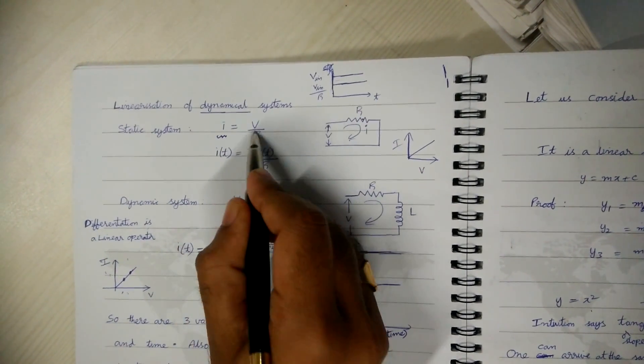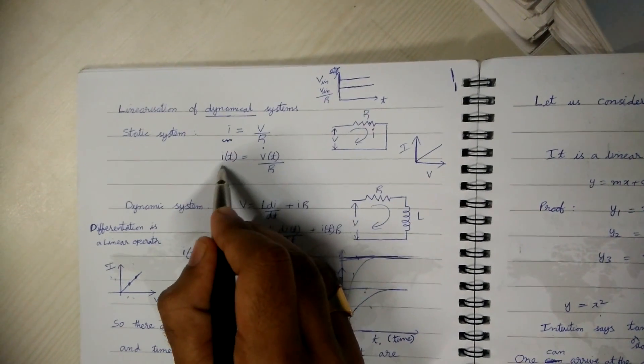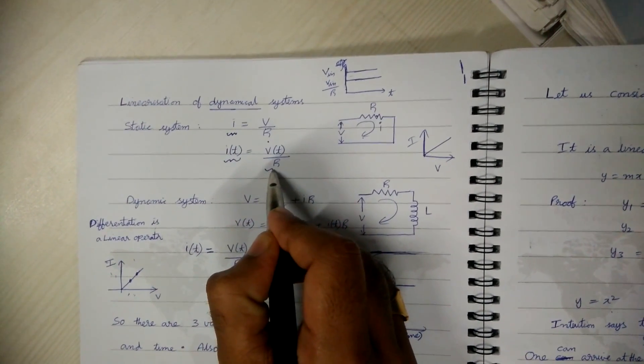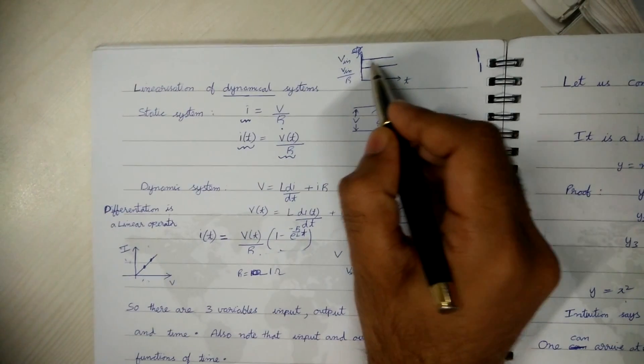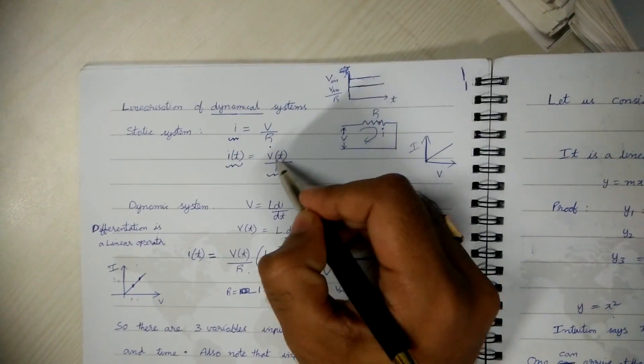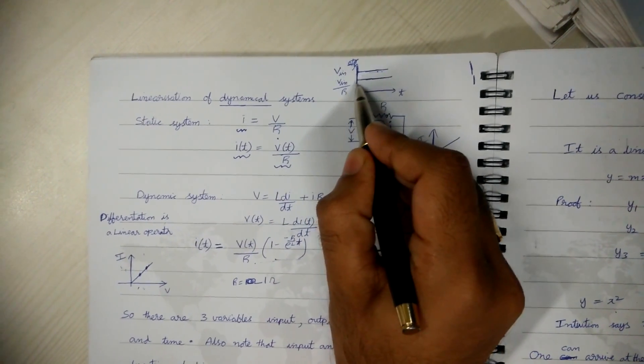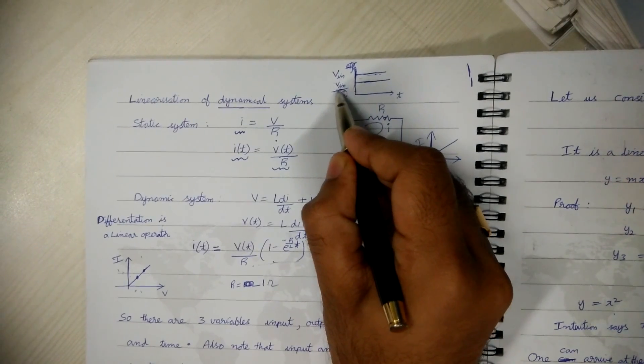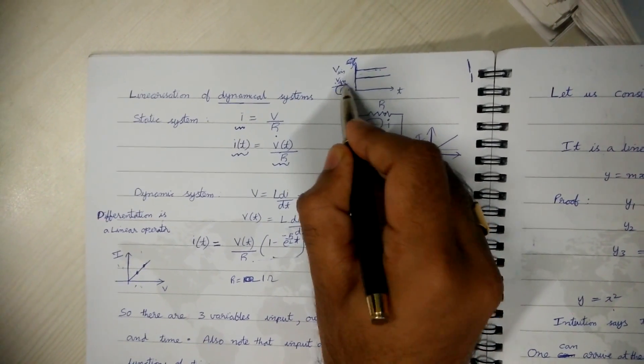So output I is V by R. Suppose if we apply step input, if our input is V in, then depending upon the value of resistance our current will be V in by R.